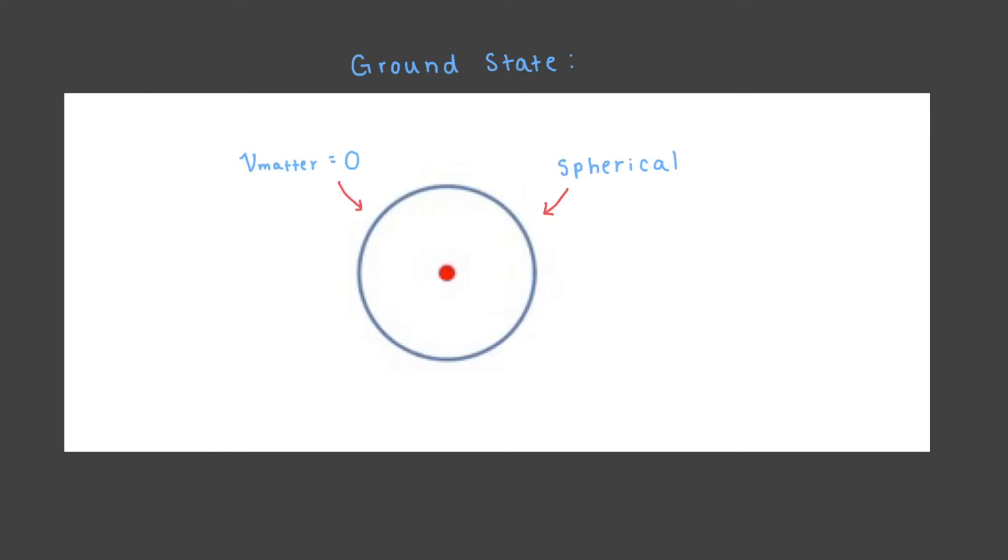This, however, is not the only shape that an electron wave can have. Given the right amount of energy, an electron can be transformed into a wave with different shape and size. Here's a few examples.